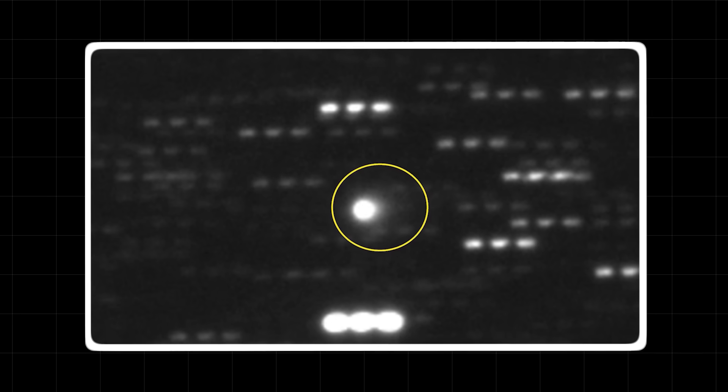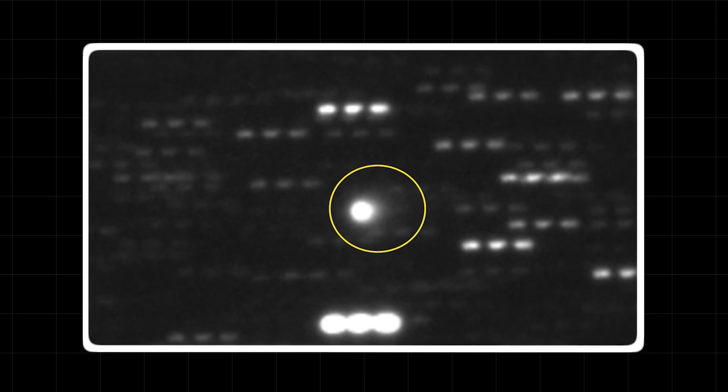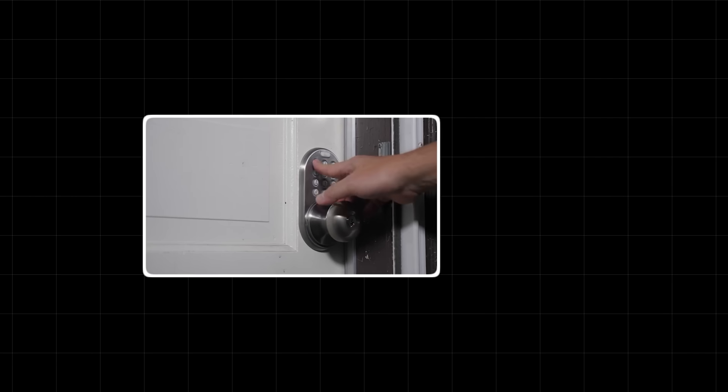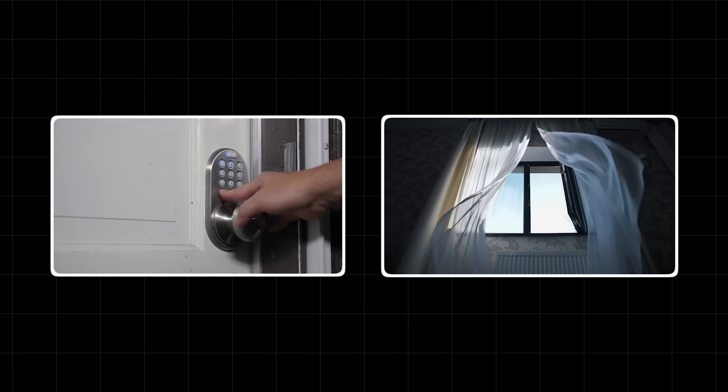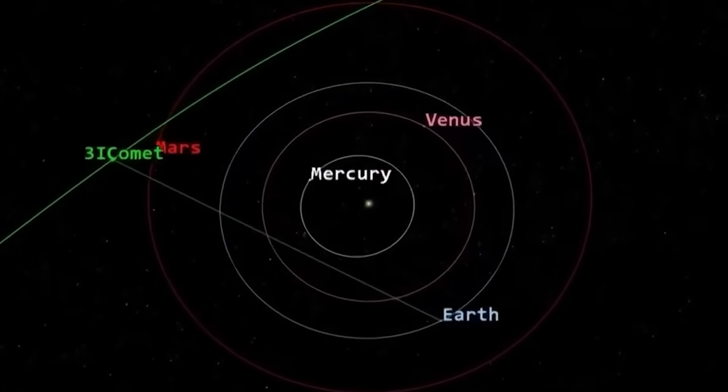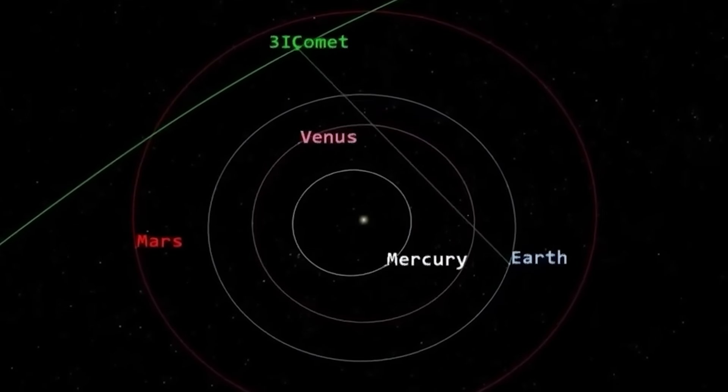The discovery of 3i Atlas has exposed a chilling vulnerability in our planetary defense systems. We are like a house with a locked front door, but with all the windows wide open. The threat is not just from within our own cosmic neighborhood, it can come from anywhere, at any time.